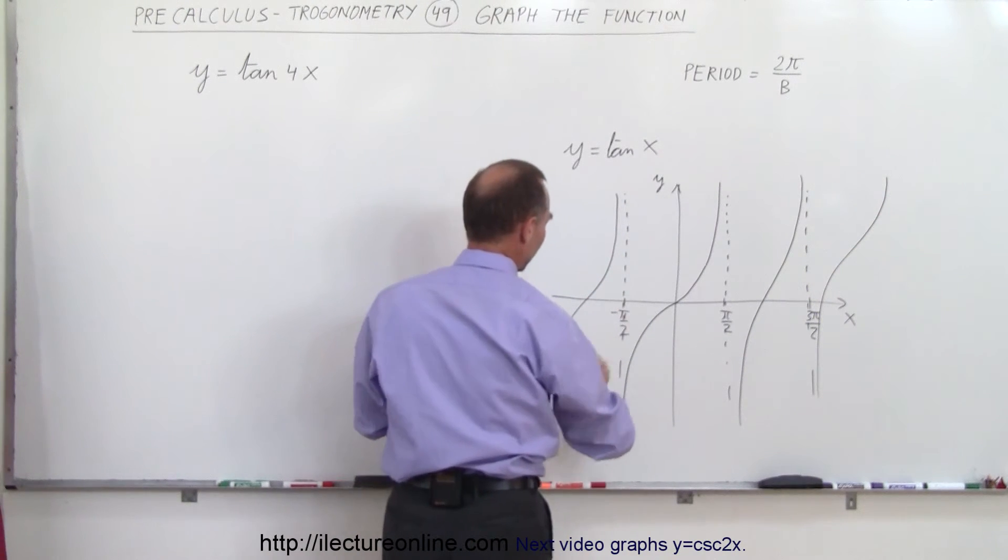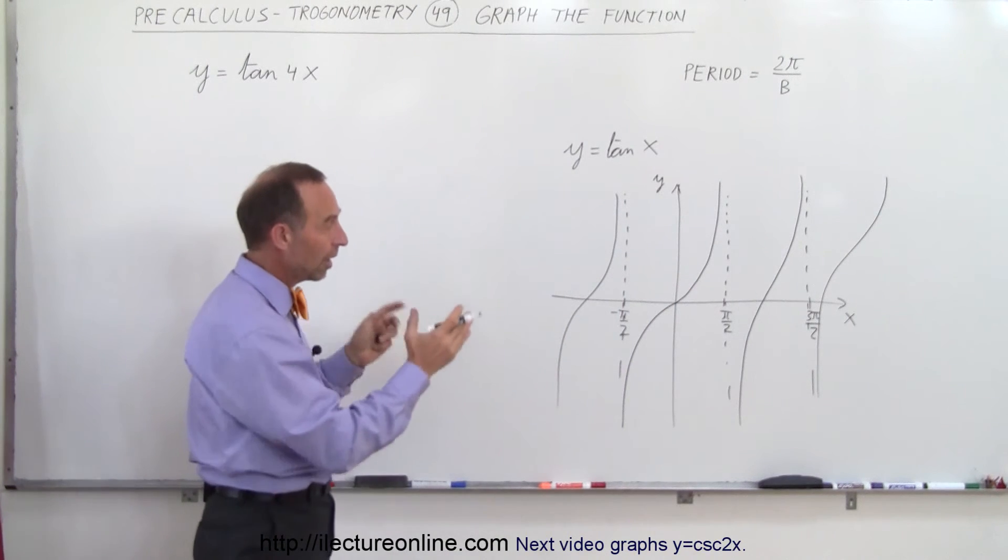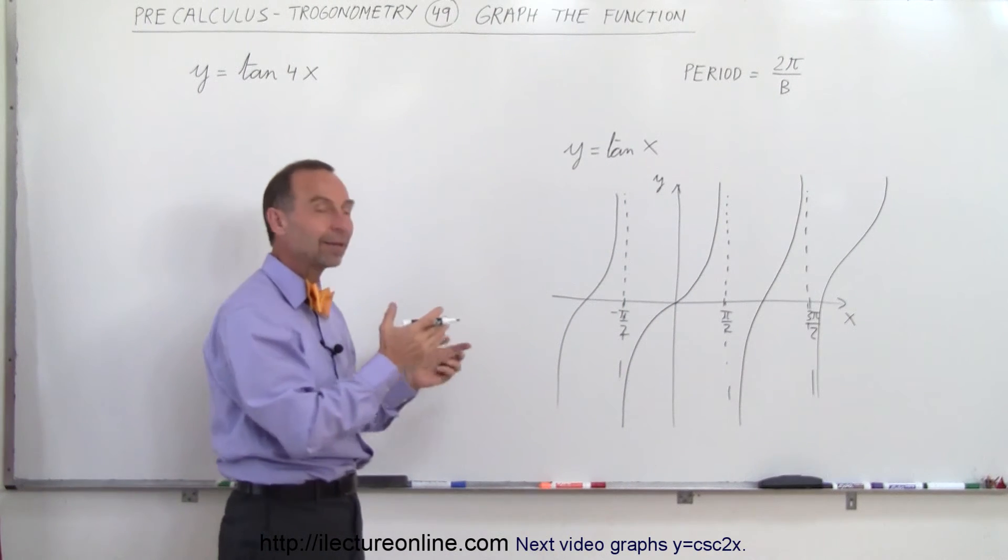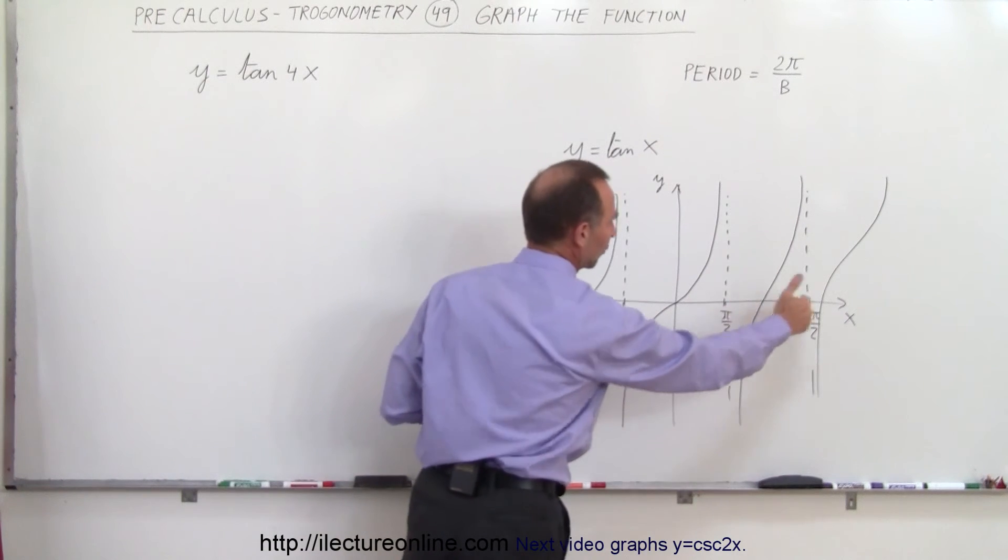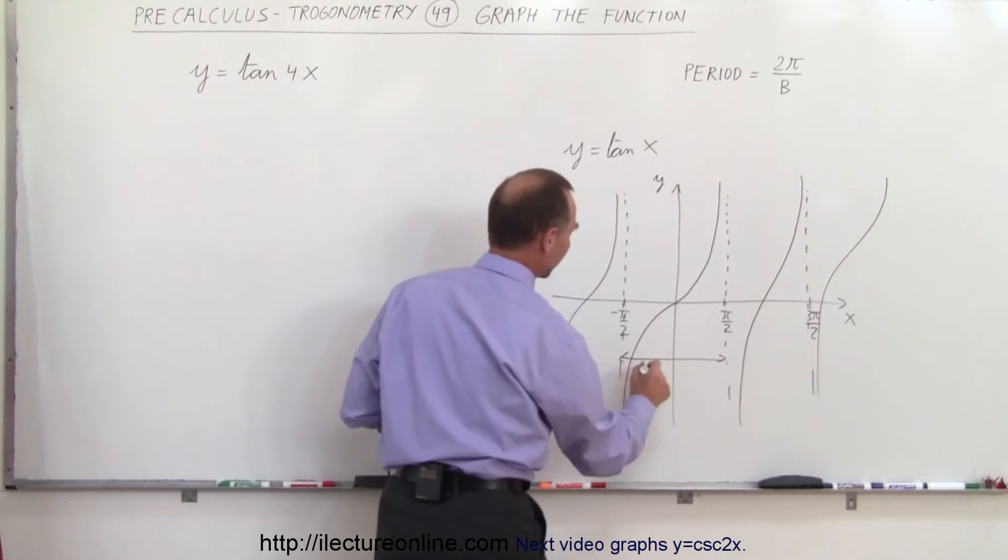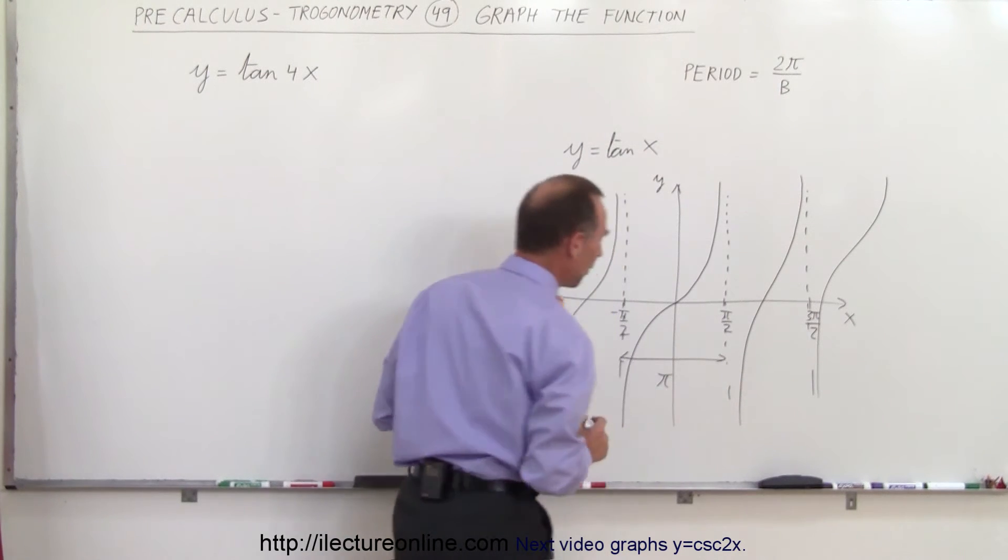You can see that the tangent just simply repeats like that in intervals of pi going from minus pi over 2 to plus pi over 2 and so forth. So the distance between them or the period for the function is always equal to pi.